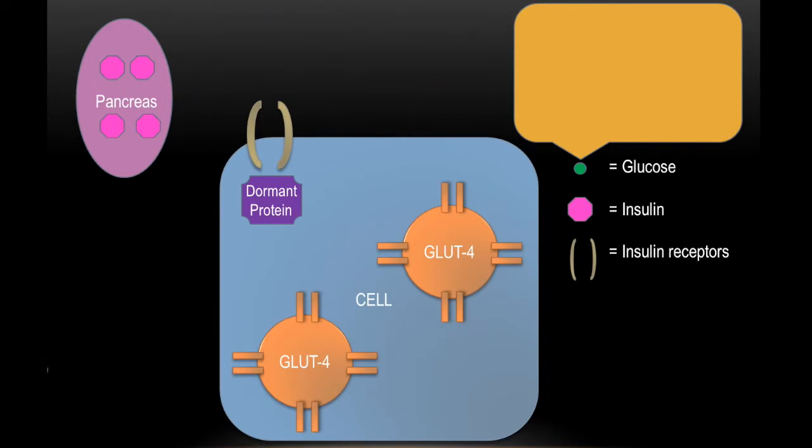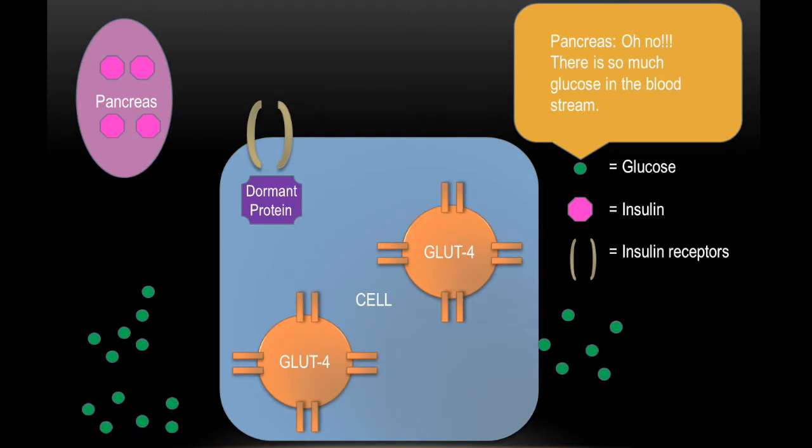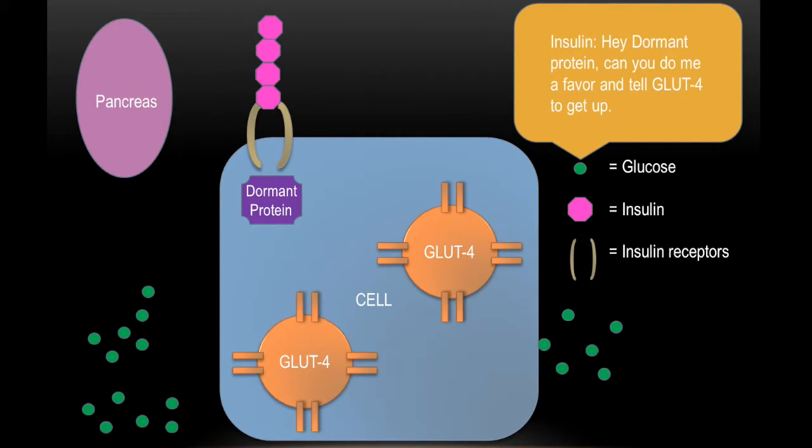Okay so the green in this case is glucose. So basically what it does is that you have glucose so pancreas is like oh no there's so much glucose in the bloodstream. So the pancreas releases insulin and the insulin goes to the insulin receptors. And once they go to the insulin receptors insulin is like hey dormant protein can you go to the glut force. And the dormant protein goes to the glut force and glut force goes to the cell membrane.